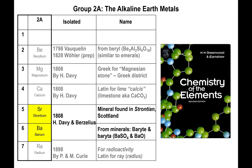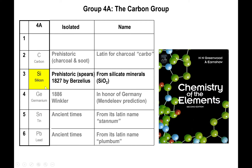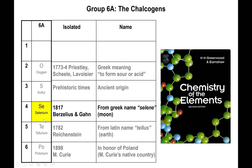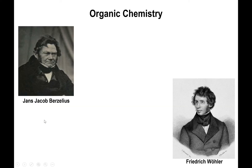To give an idea about Berzelius's reputation, he was a powerhouse in chemistry because he is one of the chemists that actually discovered, isolated, and identified new elements like strontium, barium, silicon, and selenium. So Berzelius was actually a pretty big alpha dog in chemistry at the time.